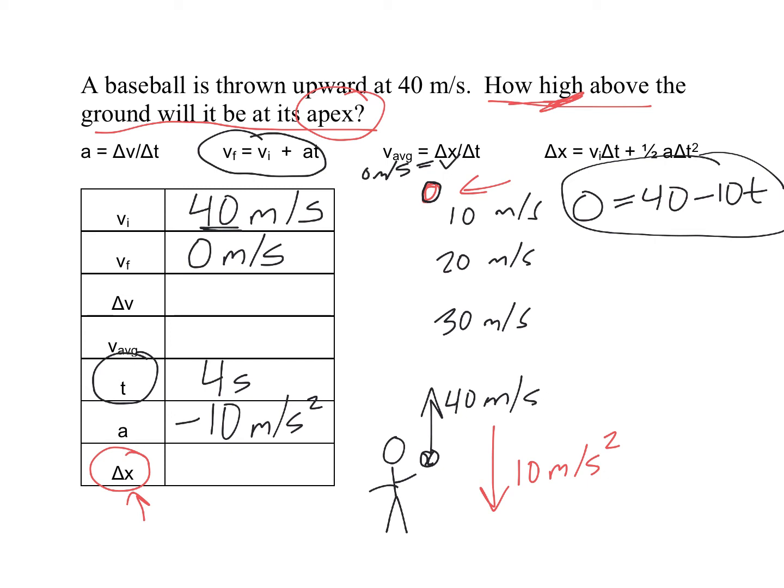So anyway, that's the key thing is finding the time. Once you find the time, we're trying to find the height, delta x. We can just plug into this equation right here, which we use a lot. So we say that delta x equals vi times t. In this case, vi is 40, t we just figured out was 4, plus 1 half times a, which is negative 10, times t squared, 4 squared.